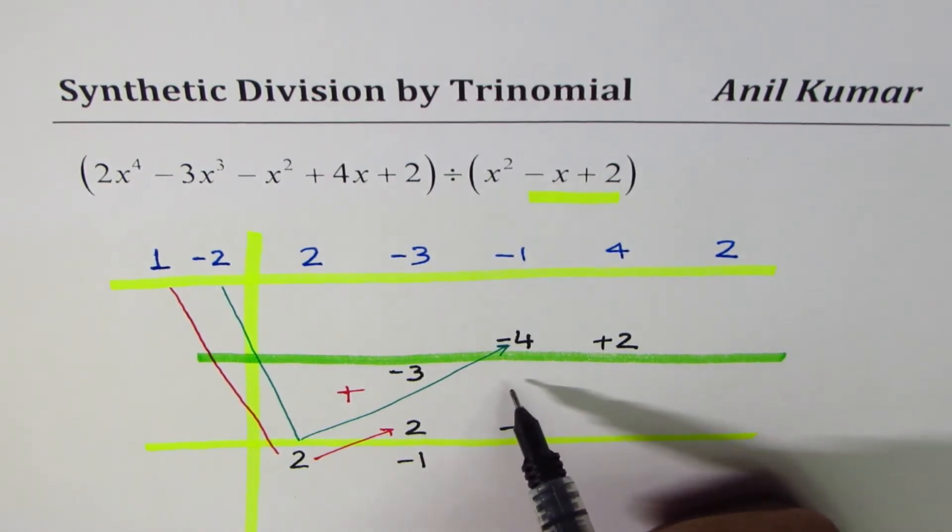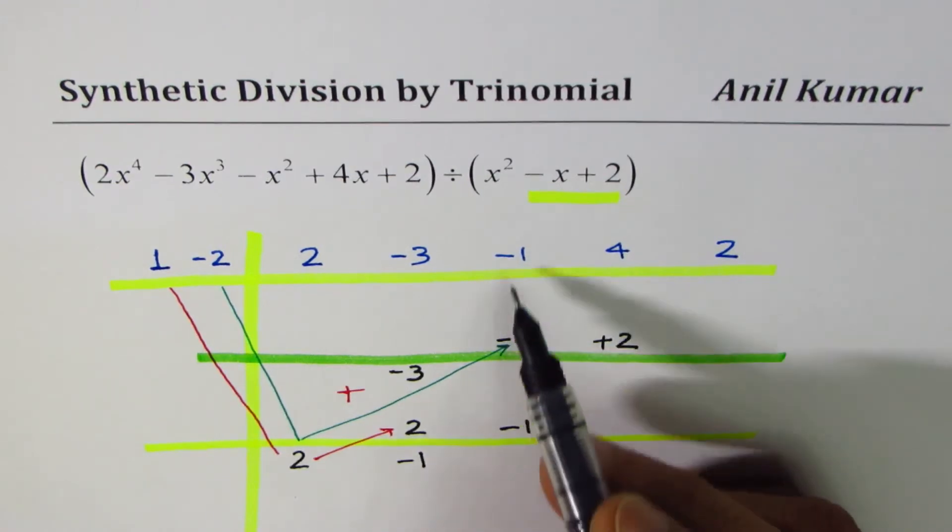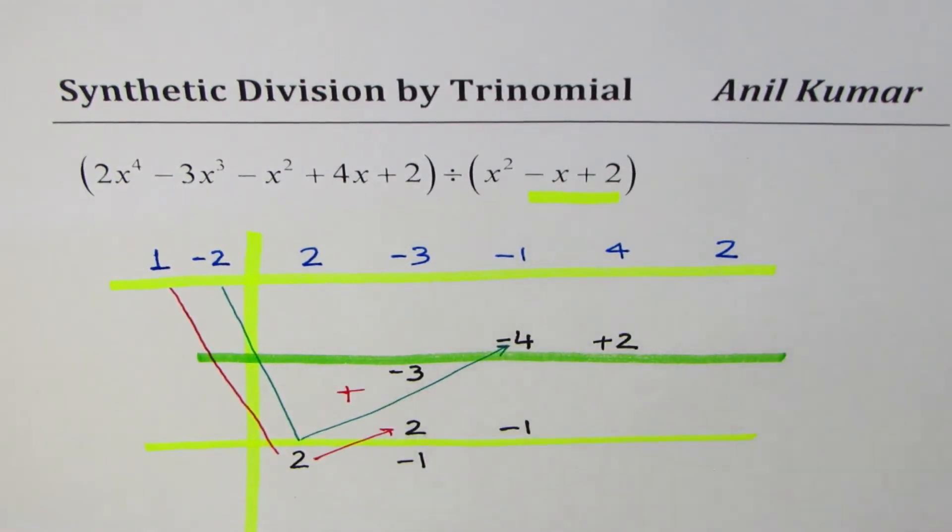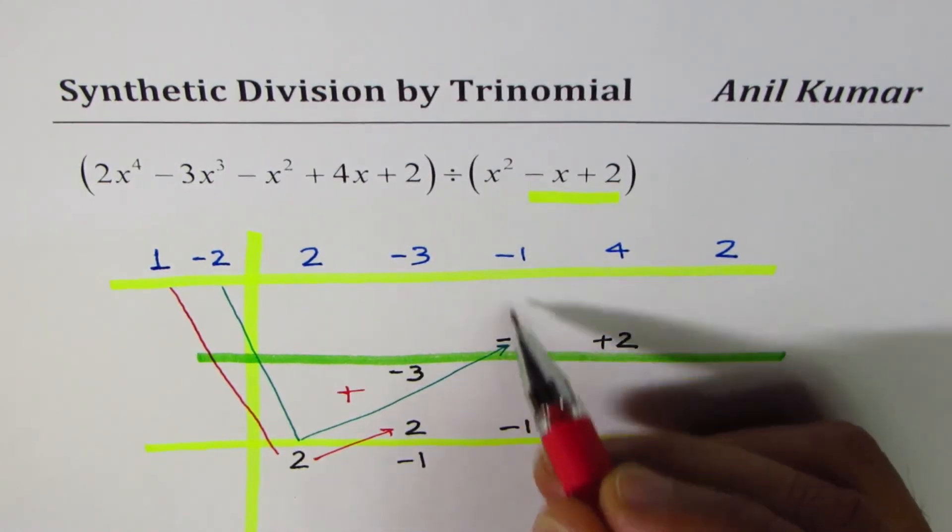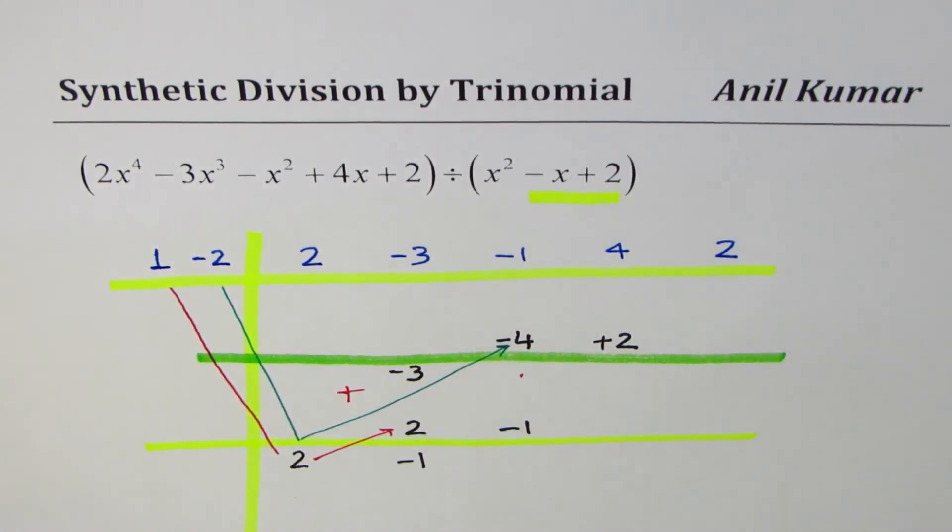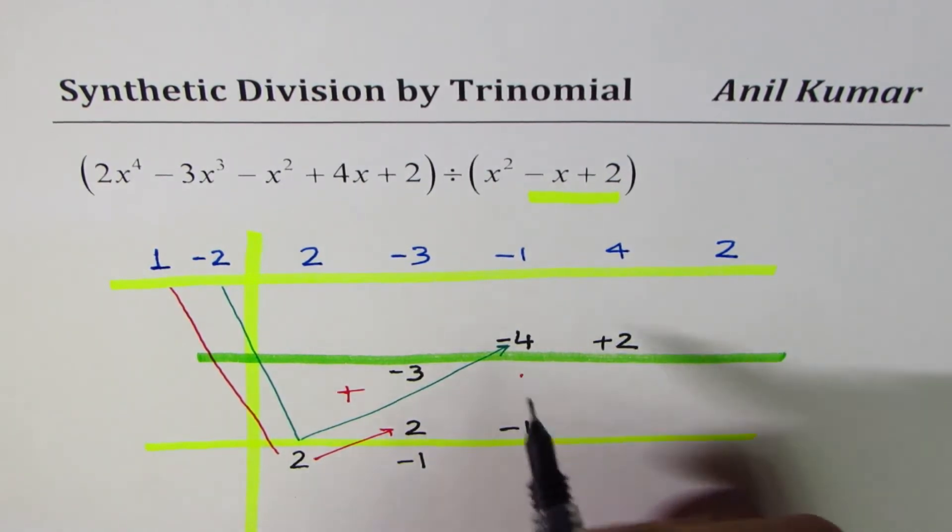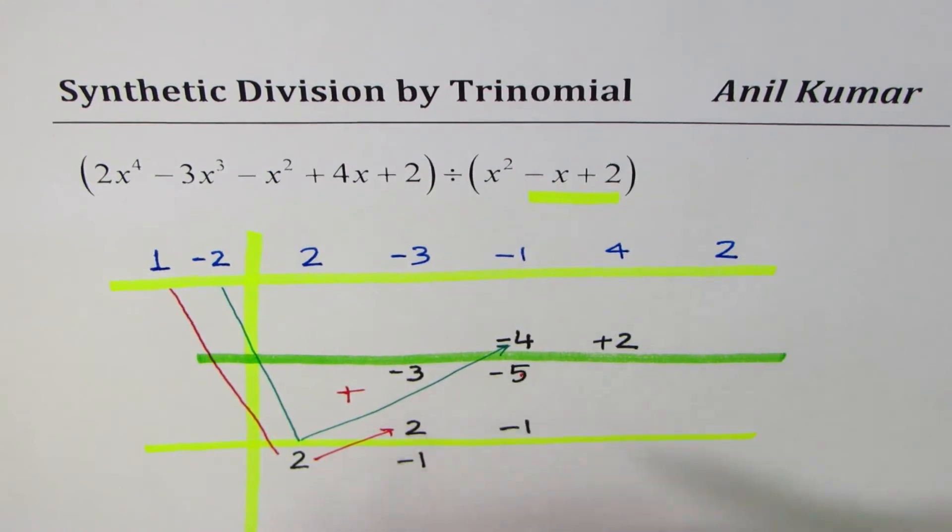Now we missed one thing here. We added these two, but do we add these guys also? Yes, we do, because then how do we have a number here? We add minus 1 and minus 4 and get minus 5.